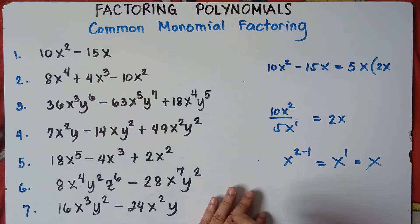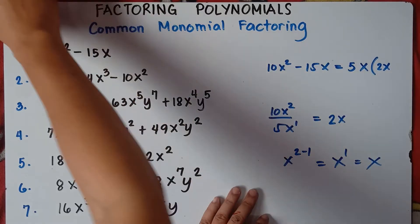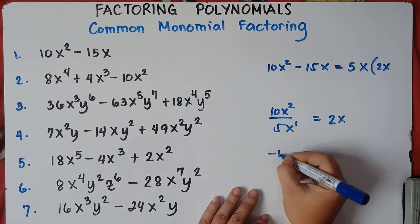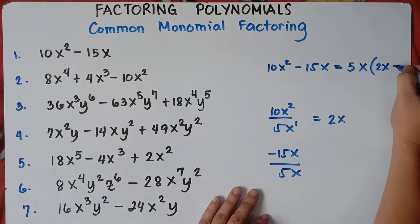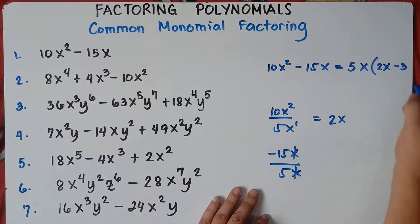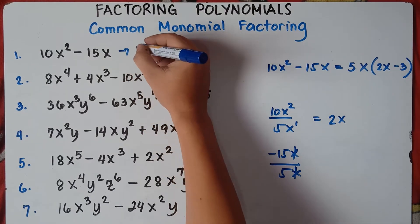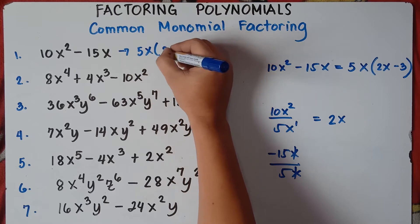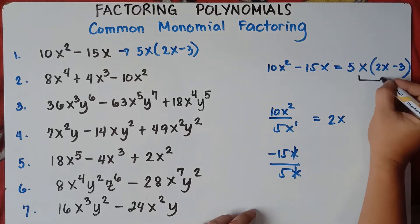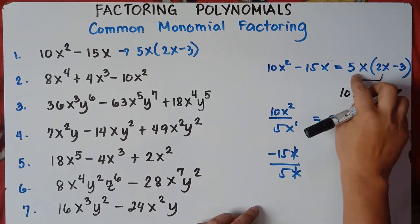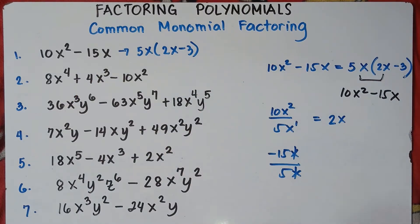Then negative 15x divided by 5x: negative 15 divided by 5 is negative 3, and x divided by x simply cancels. So the answer for number 1 is 5x(2x minus 3). You can check your answer by distributive property: 5x times 2x equals 10x squared, and 5x times negative 3 equals negative 15x. Therefore, your answer is correct.